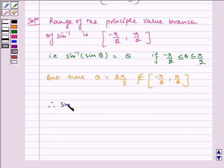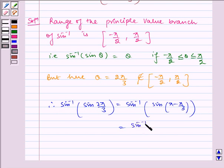Therefore, sin inverse of sin 2π by 3 is equal to sin inverse of sin of π minus π by 3, which is equal to sin inverse of sin π by 3.